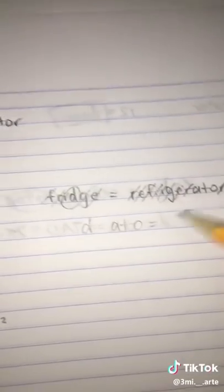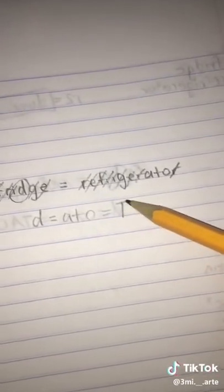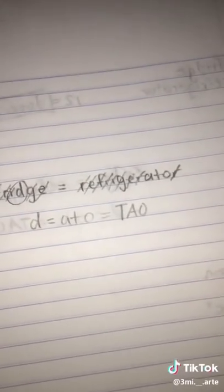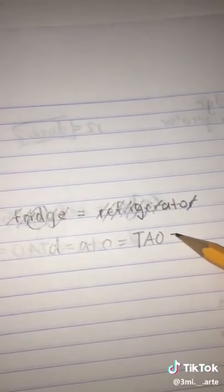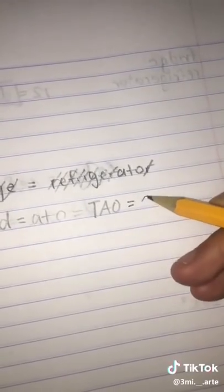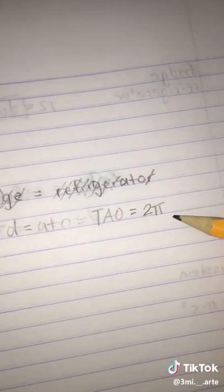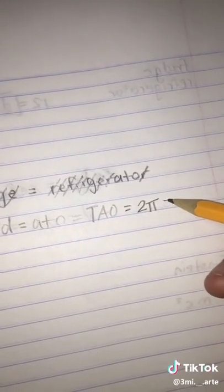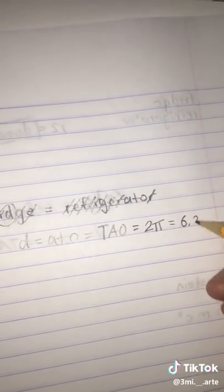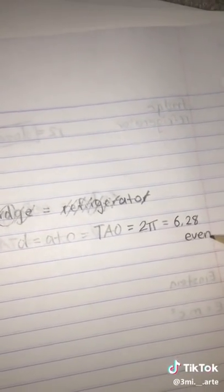If you switch the order around — because you can do that in math — it's T-A-O. Tau. And tau is a letter in the Greek alphabet, which, if translated to English and in mathematical terms, means 2 times pi. And 2 times pi in numerical terms is 6.28. And that is an even number.